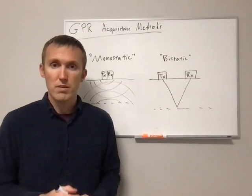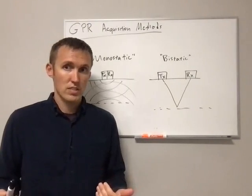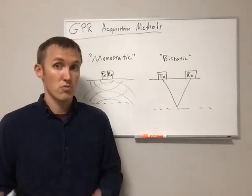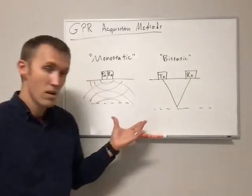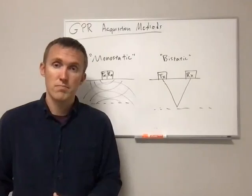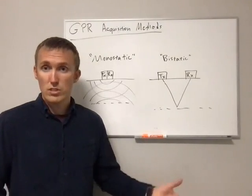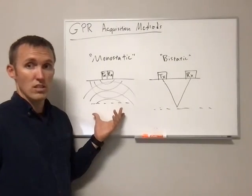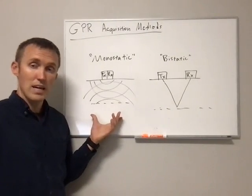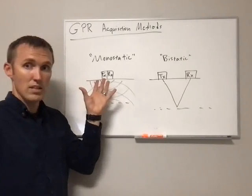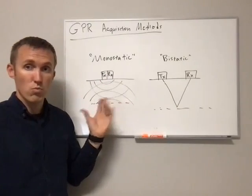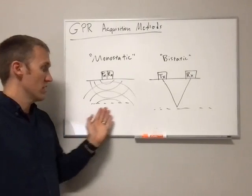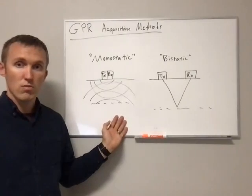Let's talk about what we get from a GPR system. The basic observations we have from GPR are two-way travel time and amplitude. Looking at the monostatic system, we get the time it takes from the transmitted to the received signal, and we get the amplitude of the return signal from a particular reflector.